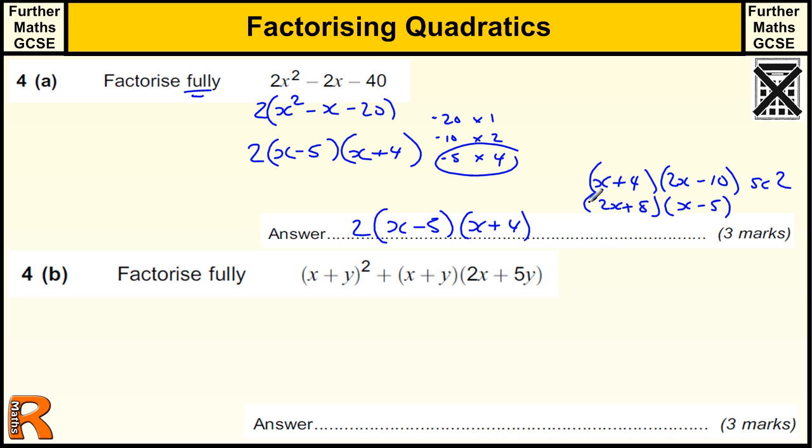If you made a mistake and cancel one of these to get to just x plus 4 and x minus 5, if you had that, you would get a special case mark of 1, because you're sort of on the right lines, but you shouldn't be cancelling out factors when it's actually asking you to show all the factors.